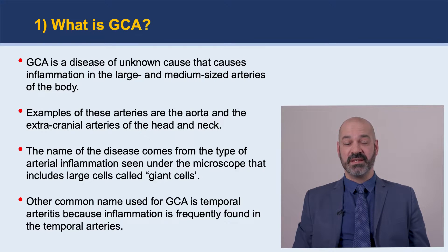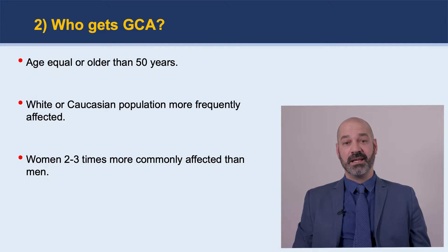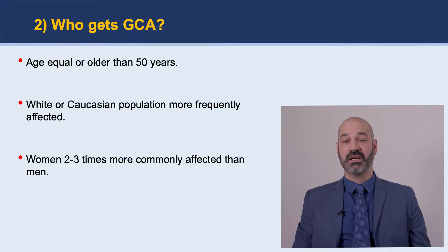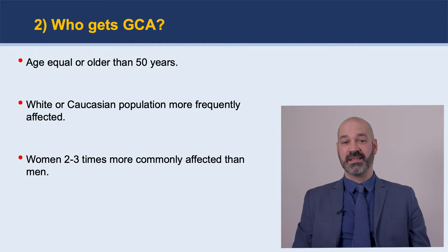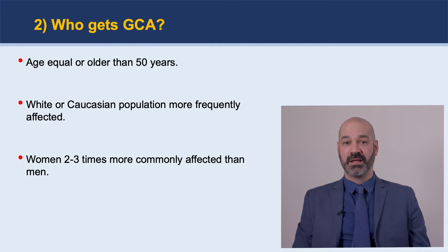Other names for this disease are Temporal Arteritis or Horton's disease. So who gets GCA? GCA is a disease of the elderly. Patients are, by definition, more than 50 years old — usually in their 70s, around 75 years of age. It's a disease that greatly affects Caucasians or white persons more than any other race. Women are two to three times more affected than men.